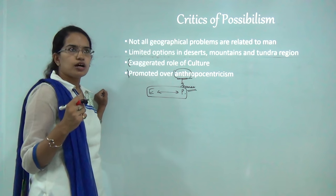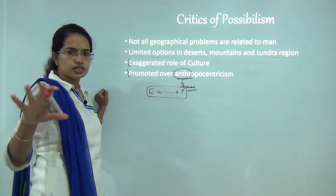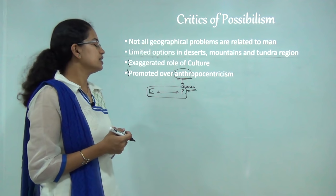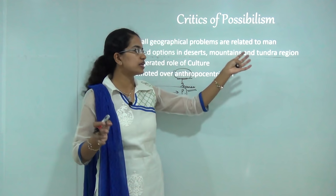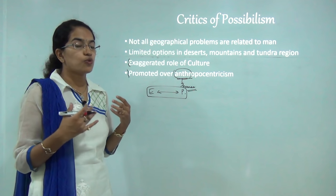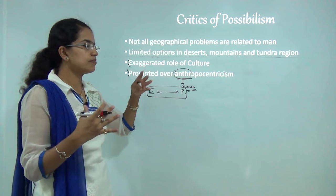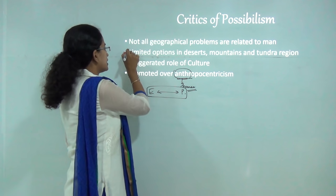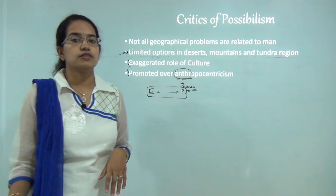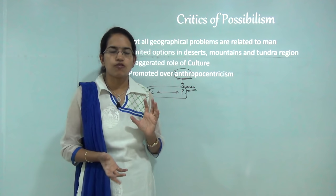Critics pointed out that civilization has developed in most parts of North America, Europe, China, and Asian regions only because of good environmental conditions there. But in regions of desert, mountains, or very cold areas like the tundra, development has not reached the extent it should. If possibilism truly held that human beings fully control the environment, we should be able to answer why those regions remain underdeveloped. Finally, not all geographical problems that exist in nature are related to or involve human beings. With this, we have covered the basics of determinism and possibilism.